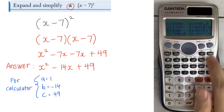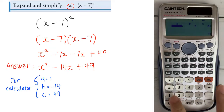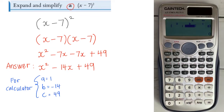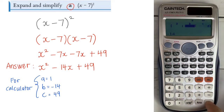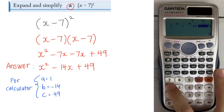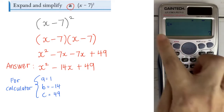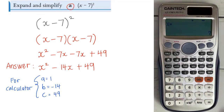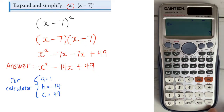Fourth question on the second calculator: mode, go for number 5, then 3. A is 1. B is minus 14, so minus 14, equal. C is 49 — key in 49, equal. Press equal again. Instead of showing x1 and x2, notice it's just x, because our brackets have the same value. So reverse what you see — it should be x minus 7.